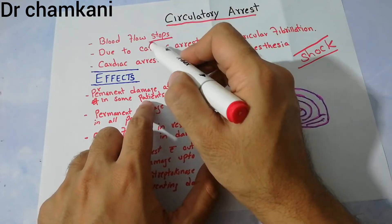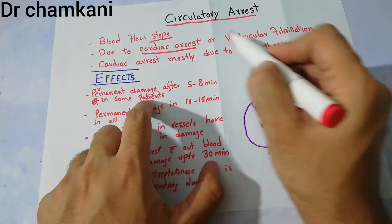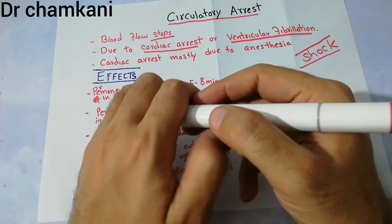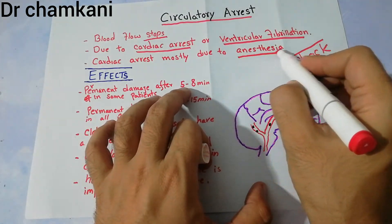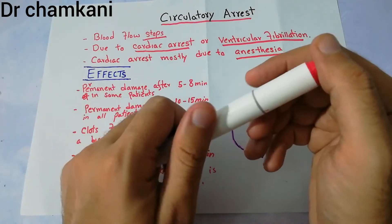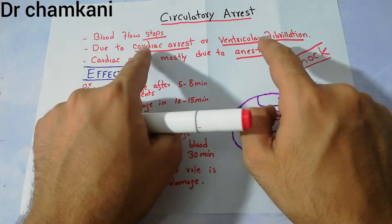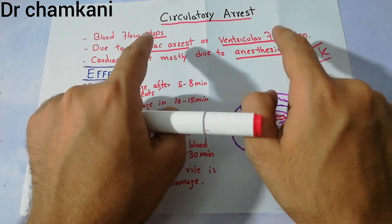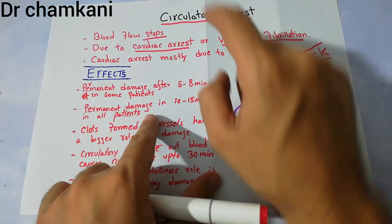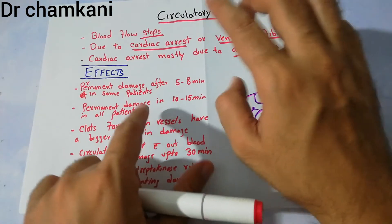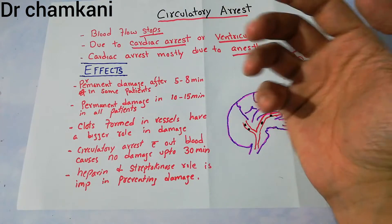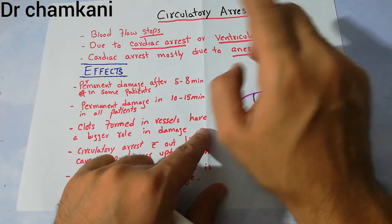The most common causes of circulatory arrest are cardiac arrest and ventricular fibrillation. These conditions most of the time occur in normal patients under anesthesia — when patients are being operated and anesthesia is given on the OT table. Although these effects have decreased with safer anesthetics nowadays, it remains a side effect. Cardiac arrest can also occur due to many other reasons, such as myocardial infarction, or due to arrhythmias where ventricular fibrillation can develop.